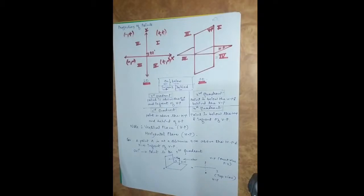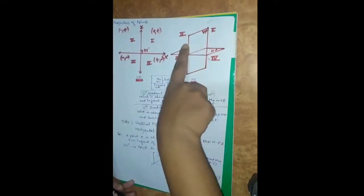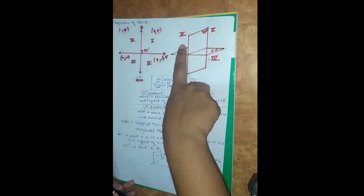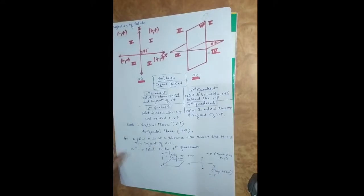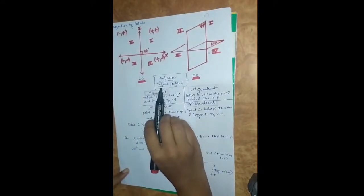We have projections of planes with respect to the quadrants — first quadrant, second quadrant, third quadrant, and fourth quadrant. Depending upon the position of the point in the respective quadrant, we have to draw the projection of the point. For explaining the position of a point in the respective quadrant, four basic words are used: on, below, in front, and behind.